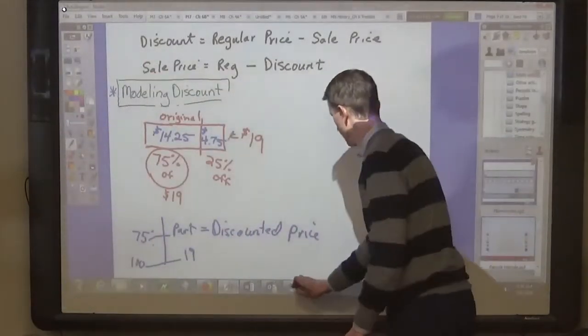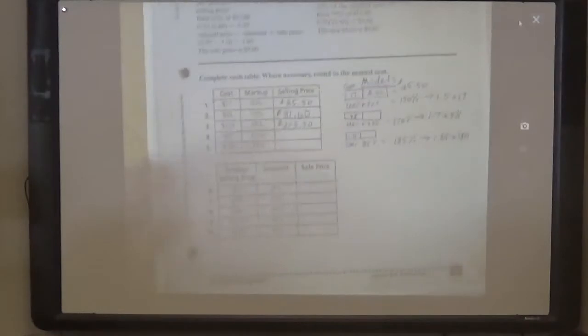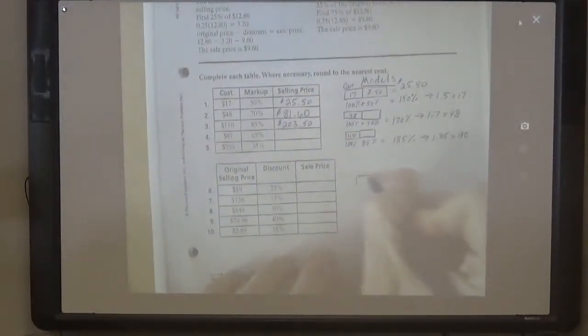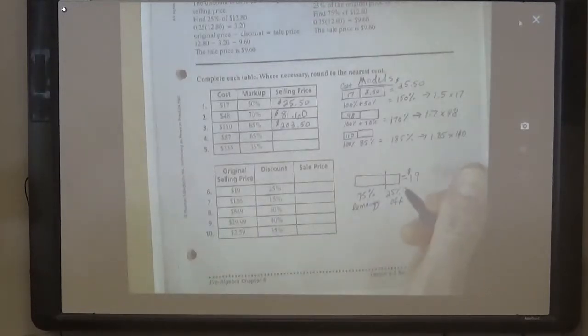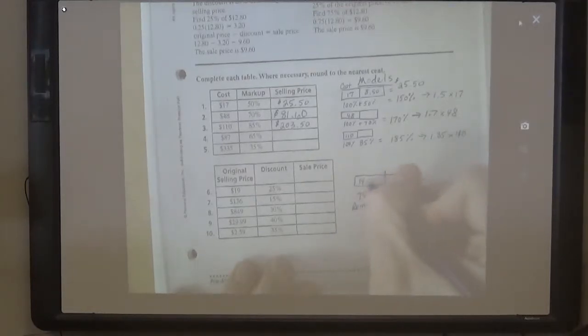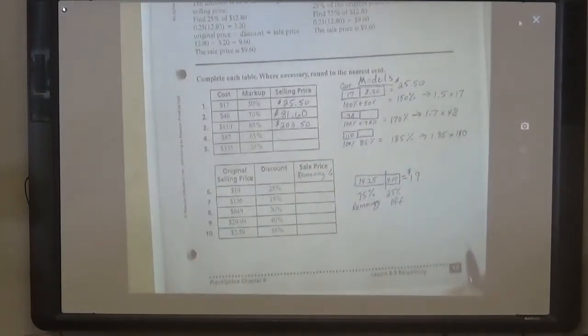So this is how you model the discount. Let's go back to your worksheet. Here we go. So now we have an original price box, which is going to be - let's use a bigger box so that we have room - $19, 25% off, 75% remaining. So it was $14.25 and $4.75. The sale price is the remaining percent, isn't it?